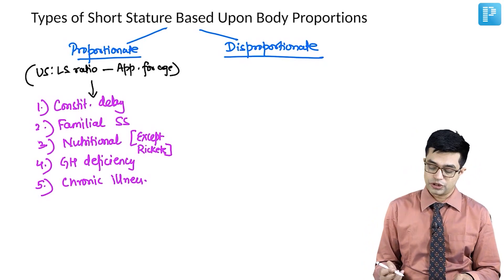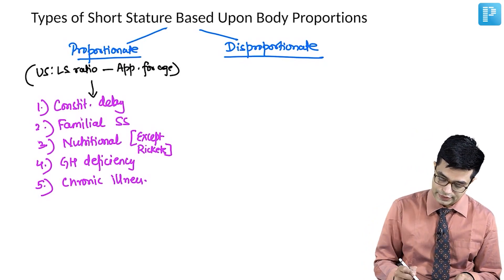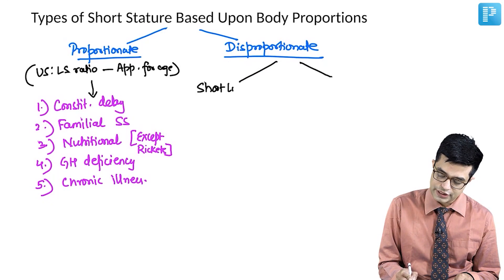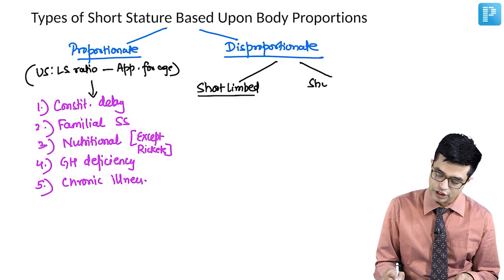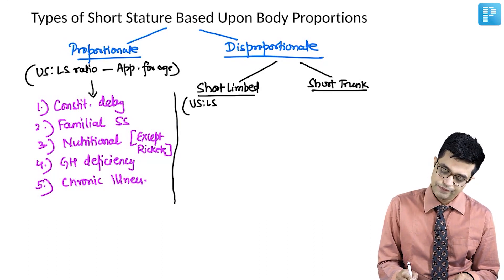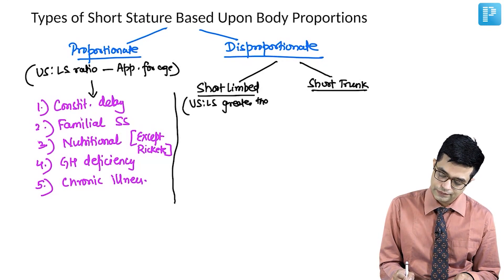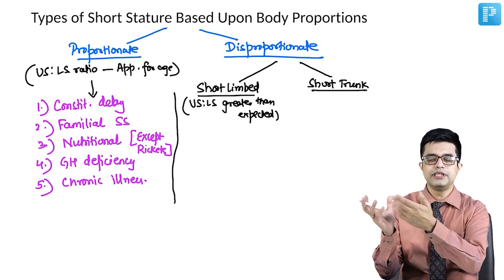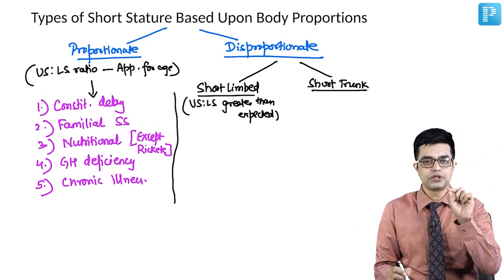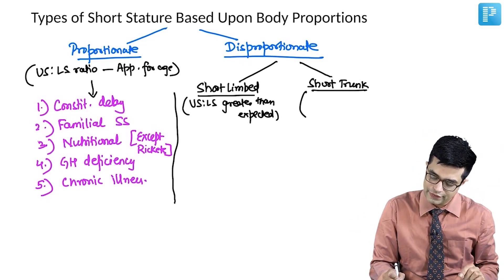Disproportionate short stature can be of two further varieties: short-limbed short stature and short-trunk short stature. In short-limbed short stature, the upper segment to lower segment ratio will be greater than expected for age — for example, if a normal child has a 1.3:1 ratio, this child has 1.8:1. Whereas short-trunk short stature will have an upper segment to lower segment ratio less than expected for age.